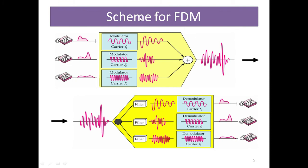In the FDM scheme, multiple frequency signals are given to modulators and combined together. This system has frequencies F1, F2, F3 — all those frequencies are combined in the multiplexer and transmitted through the channel. At the receiver, how to separate them out? They are separated with the help of filters — filter 1, filter 2, filter 3 — and each filtered signal is given to the allocated demodulator for F1, F2, F3, so each user receives and processes the data.